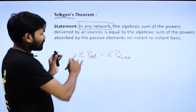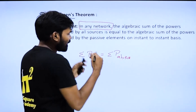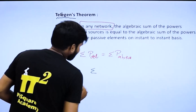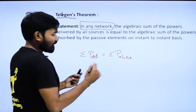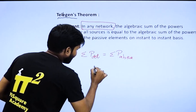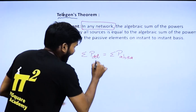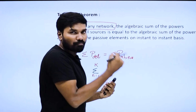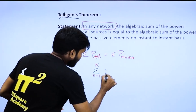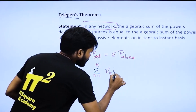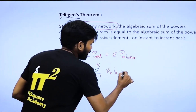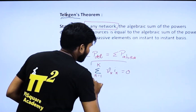Some people write this in a different way. If you have n number of elements, you add every element's power along with its polarity. The power formula is voltage into current, and that sum results in zero.